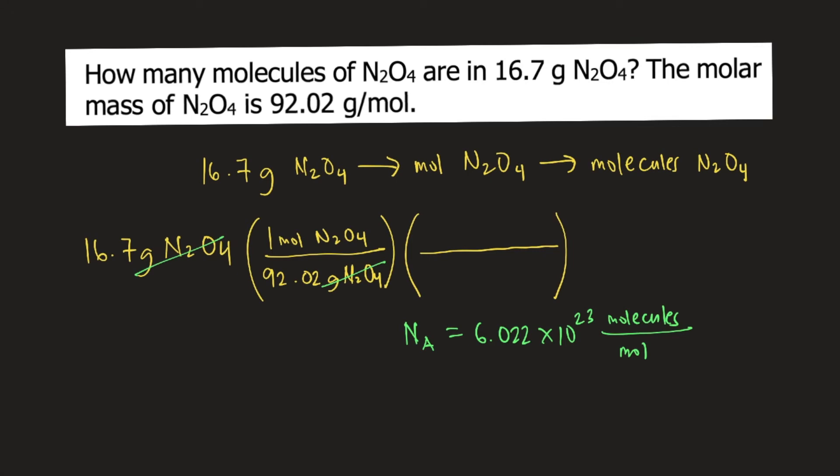So for every one mole of N2O4, it contains 6.022 times 10 raised to 23 molecules of N2O4. And if you solve this entire equation,